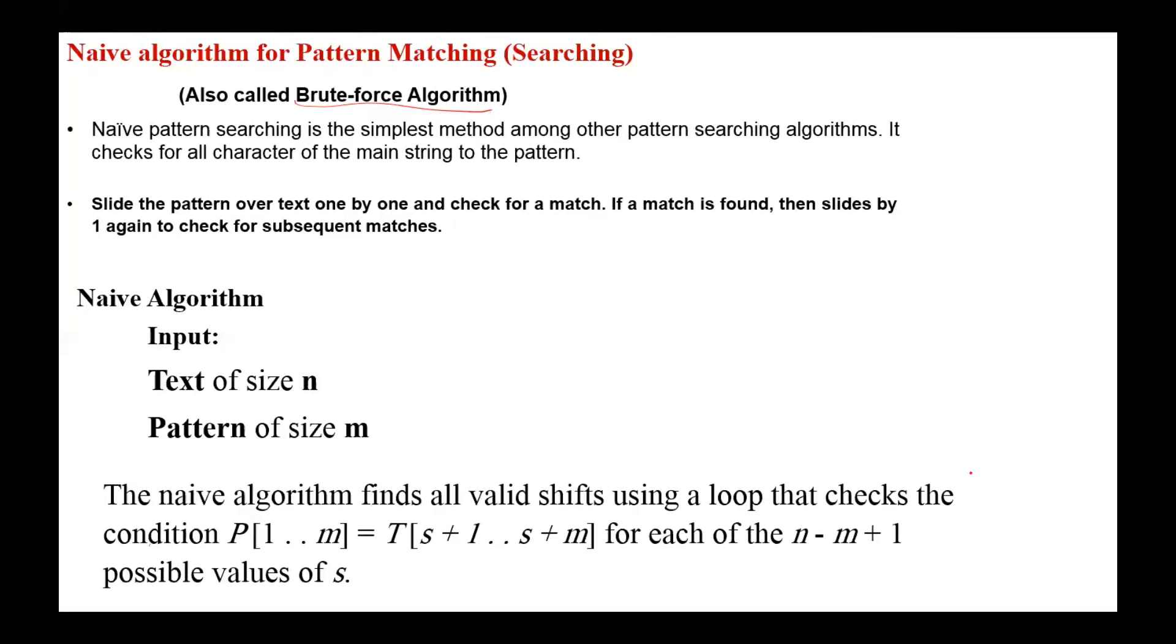In general, the naive algorithm finds all valid shifts using a loop that checks if the pattern of size m is equal to a substring of the text for each of the n minus m plus 1 possible values of s.